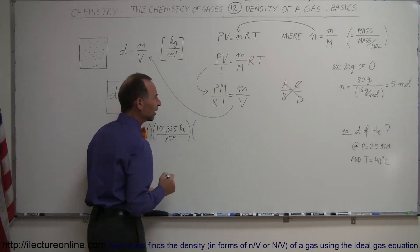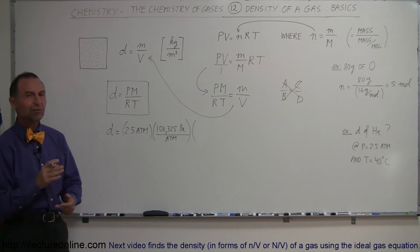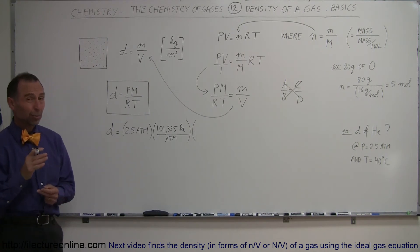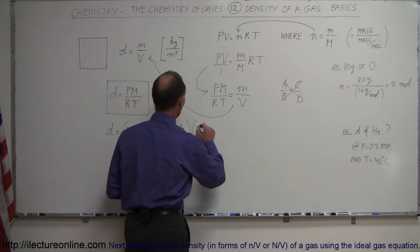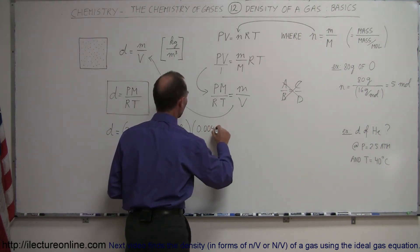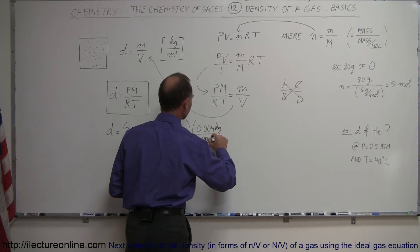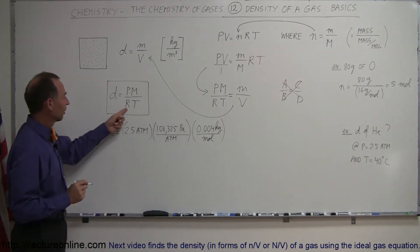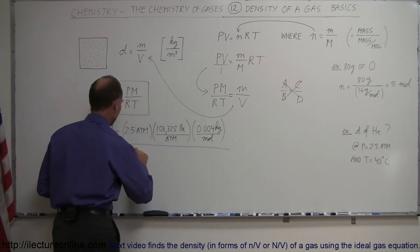For the molar mass, we're dealing with helium. The molar mass of helium is 4 grams per mole, which equals 0.004 kilograms per mole. For the gas constant, we divide by 8.314 joules per mole per Kelvin.